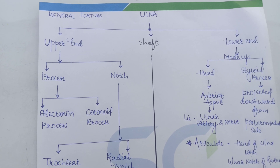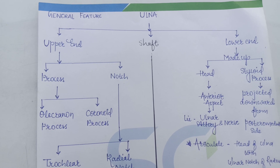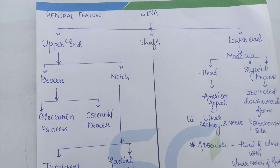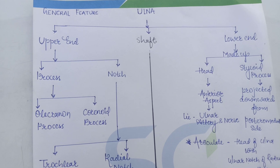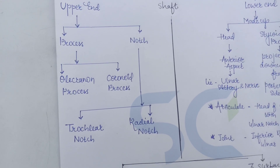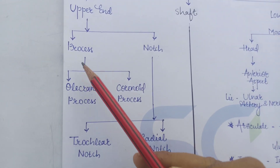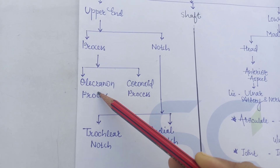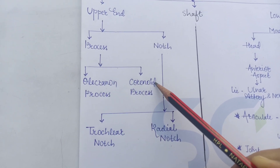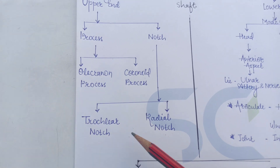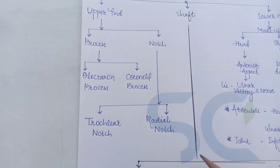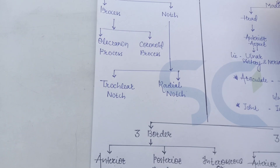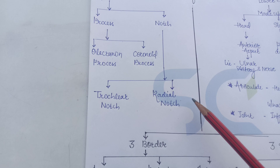The general features of the ulna bone for side determination are given. As it is a long bone, it has an upper end, shaft, and lower end. The upper end has two processes: the olecranon process and the coronoid process, and two notches: the trochlear notch and the radial notch. Note that the ulnar notch is not present on the ulna — the radial notch is present on the ulna.